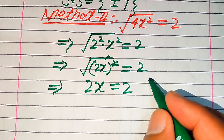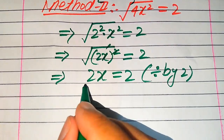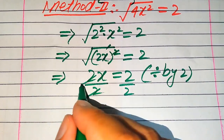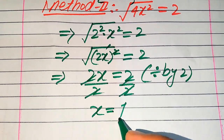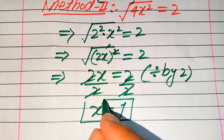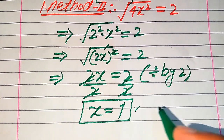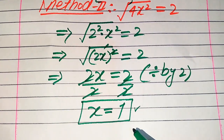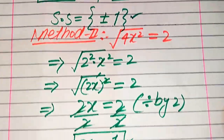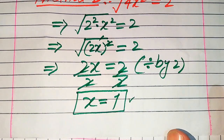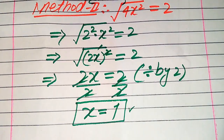We solve for x by dividing both sides by 2: this 2 cancels and we get x equals 1. So in the second method we get only one root. In the first method we already verified x equals 1 satisfies the equation. This is the final conclusion of this question. Thank you so much for watching this video — please subscribe to my channel for more exciting videos.